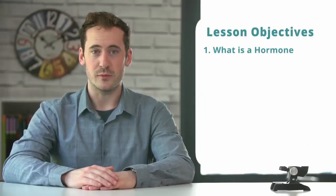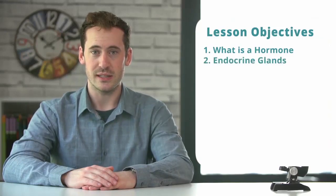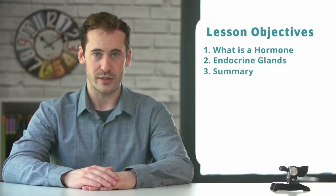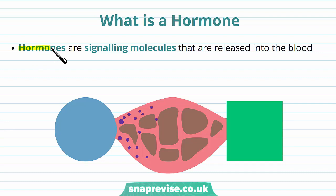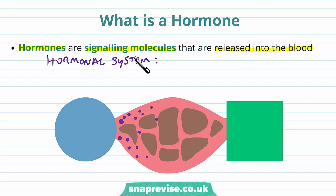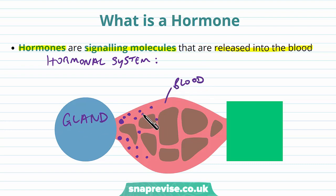In this video we'll be looking at what is a hormone, the endocrine glands, and then we'll finish with a summary. A hormone is a very important signaling molecule found in the body that gets released into the bloodstream. The hormonal system is one of the systems we use to communicate a detected change and then communicate a response, so a particular gland will release hormones into the bloodstream and the hormones travel through the blood to reach the appropriate effector.